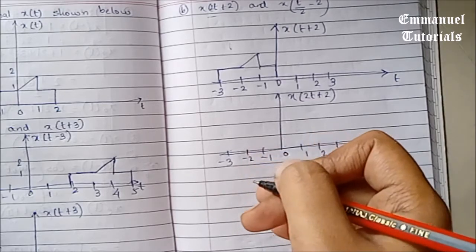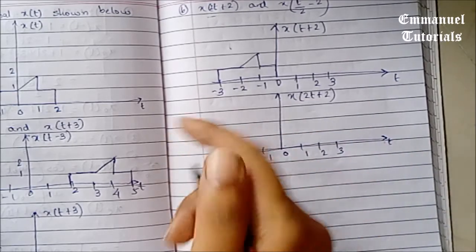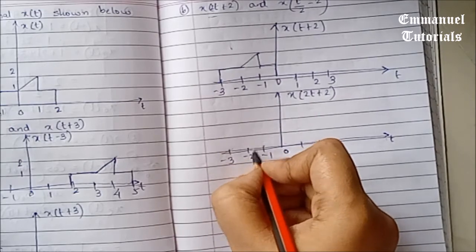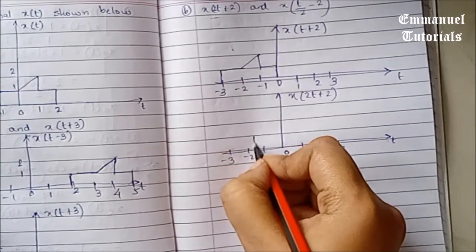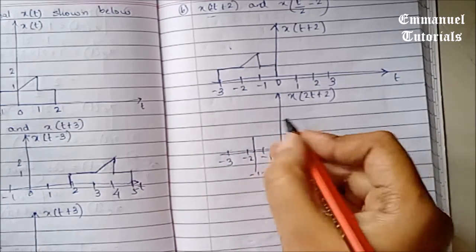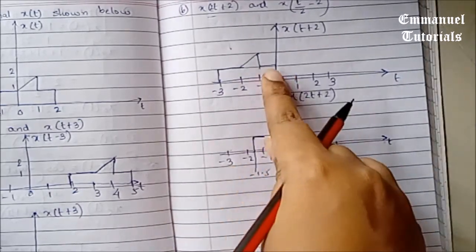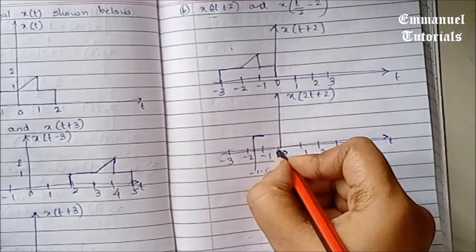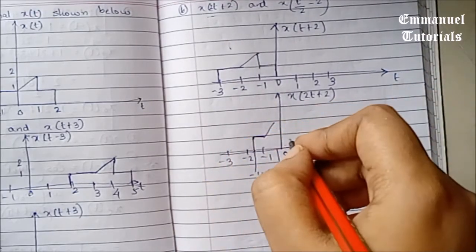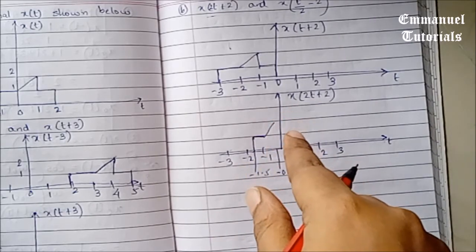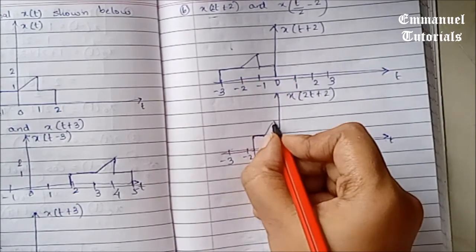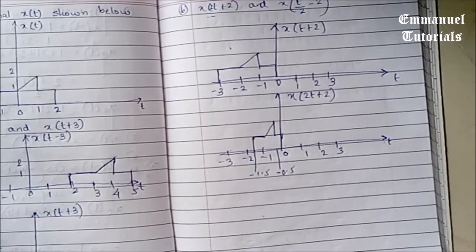So the point at minus 3 is going to appear at minus 3 by 2, which is minus 1.5. The point at minus 2 will appear at minus 2 by 2, which is minus 1. The point at minus 1 will appear at minus 1 by 2, which is minus 0.5. Note that this is a continuous time signal, so the amplitude values on the time axis will not be zero between those points. The point at 0 will appear at 0 by 2, which is again 0. So this is just a compressed version.